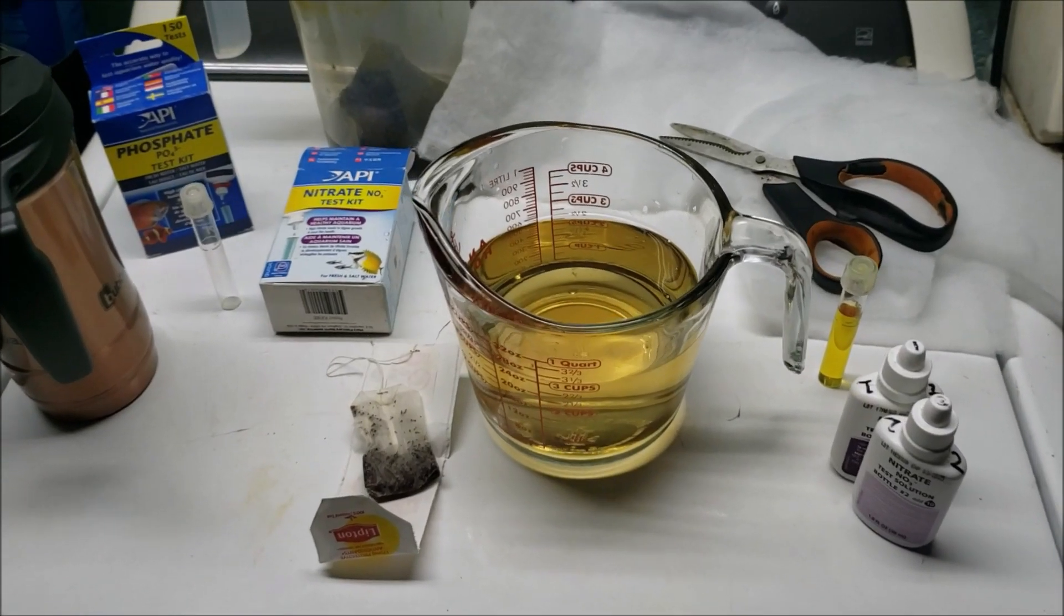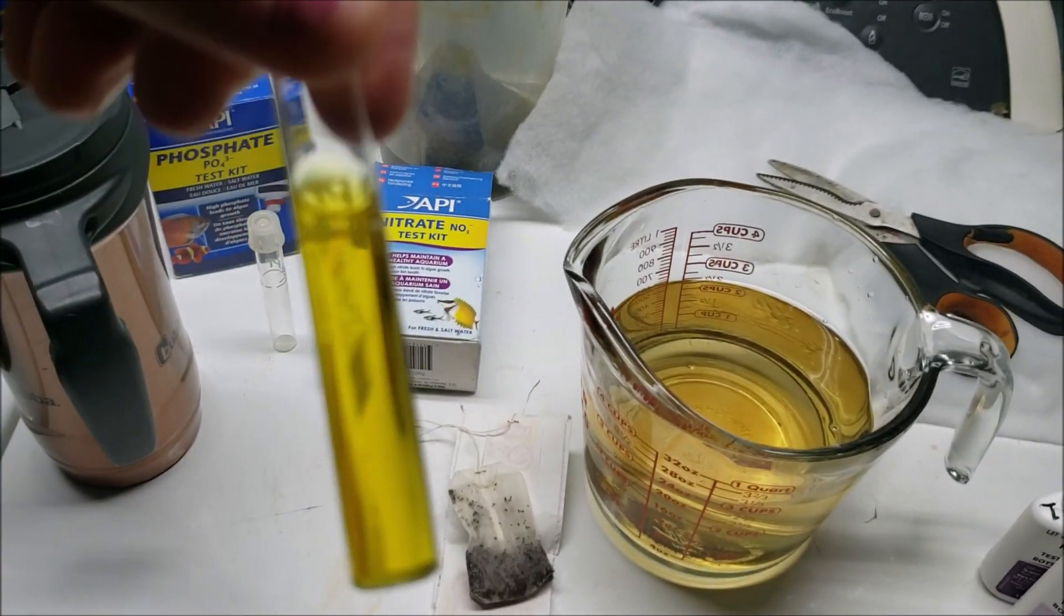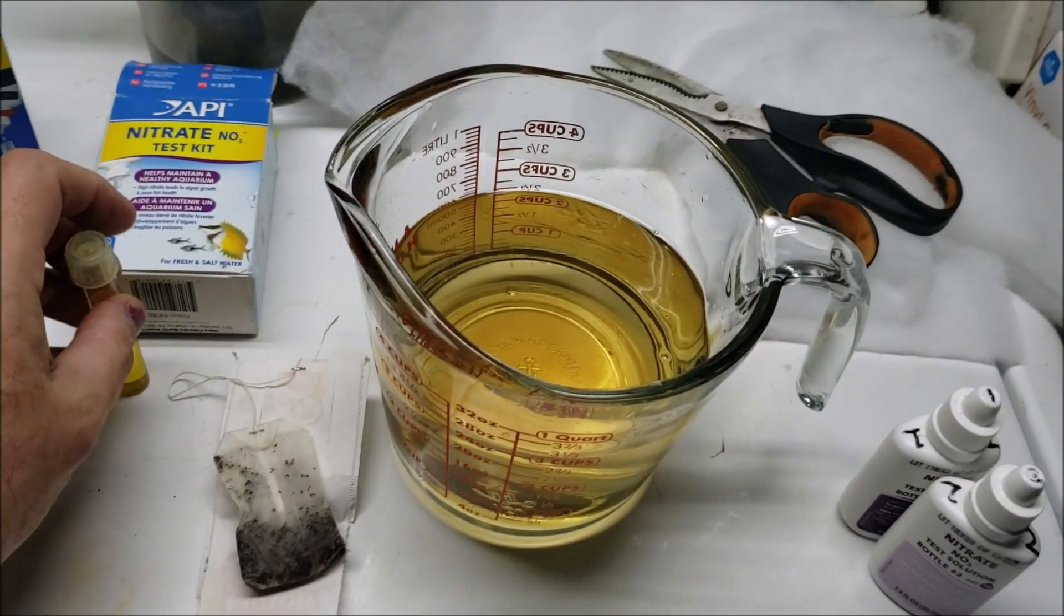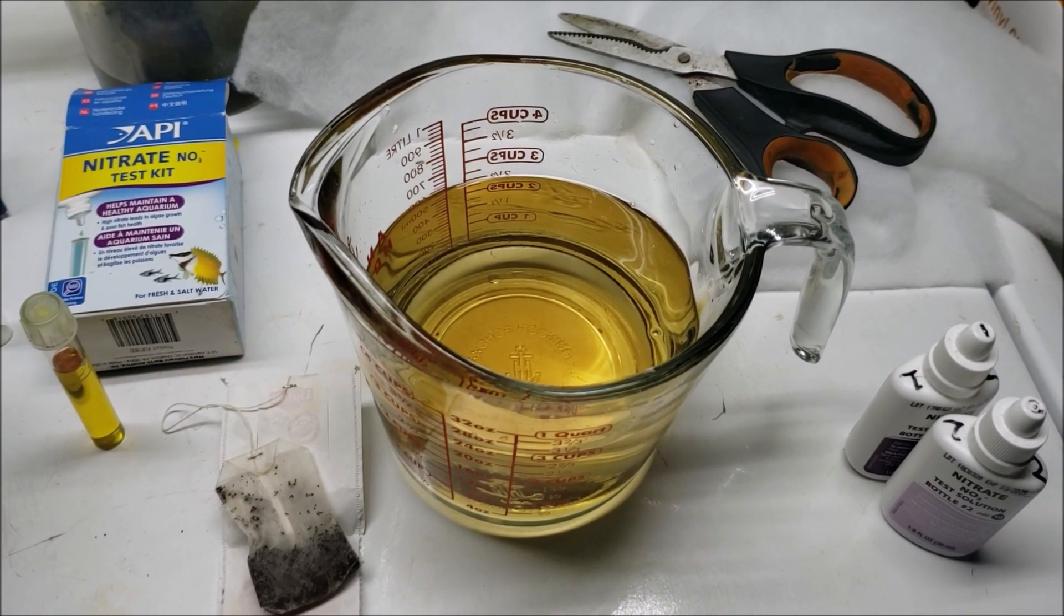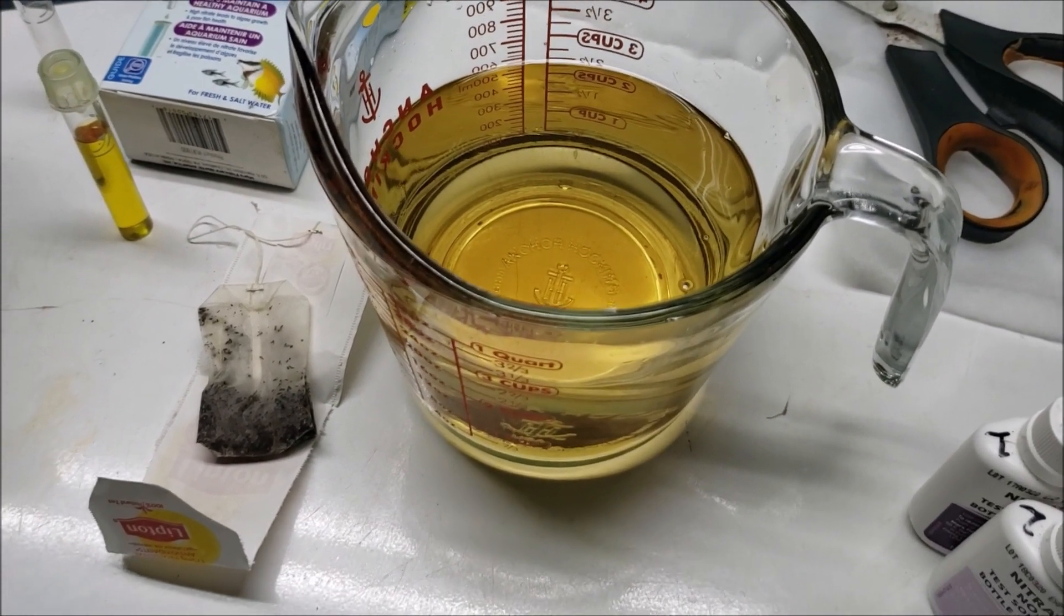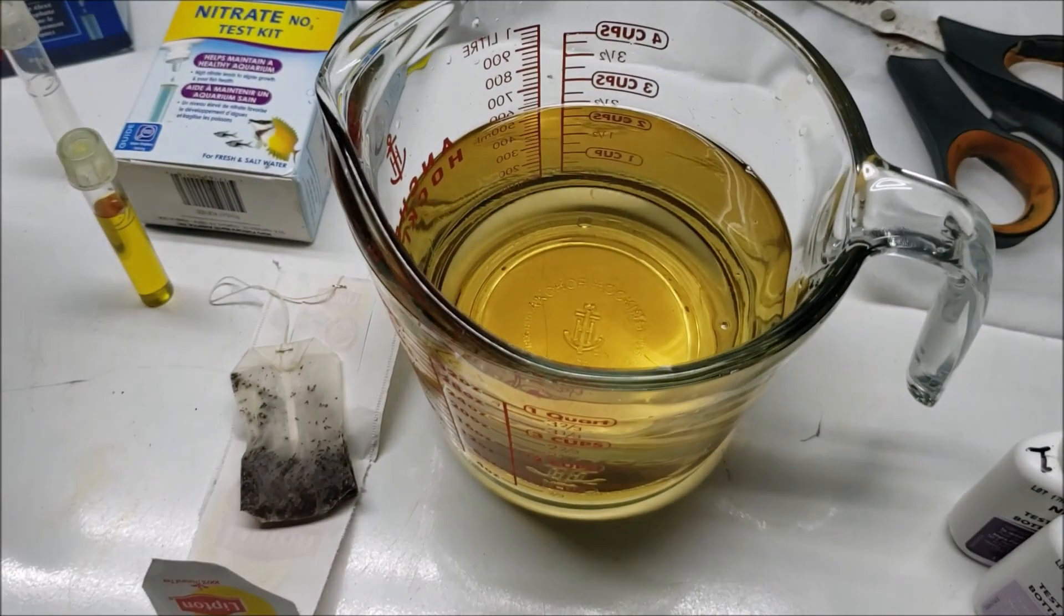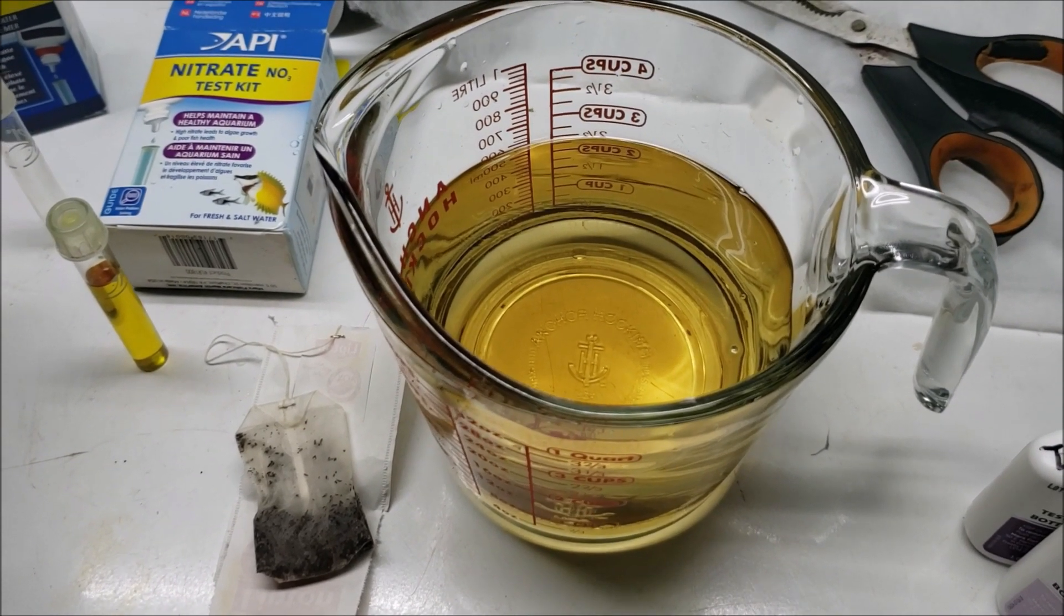All right, so here is our first test. As I suspected, it's just nice and bright yellow. We got no real color change because there is no nitrate in the water. So this is what we've done as far as staining it with tannin. That's just a tea bag, cold water. I didn't do anything to the water. I just put the tea bag in it and dipped it up and down a few times until the water got stained like that.